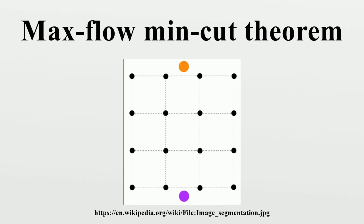Minimum cut definition: An S-T cut C = (S, T) is a partition of V such that S ∈ S and T ∈ T. The cut set of C is the set of edges crossing from S to T. Note that if the edges in the cut set of C are removed, |F| equals 0. The capacity of an S-T cut is defined as the sum of capacities of edges in the cut set, where applicable edges count their capacity and 0 otherwise. Minimum S-T cut problem: Minimize C(S, T), that is, to determine S and T such that the capacity of the S-T cut is minimal.